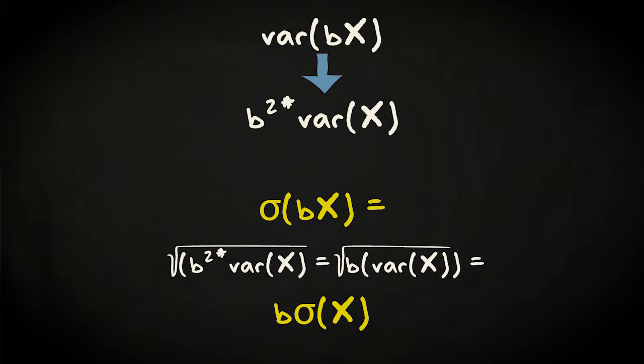The standard deviation, the square root of the variance, changes then with the factor B. Time for an example.